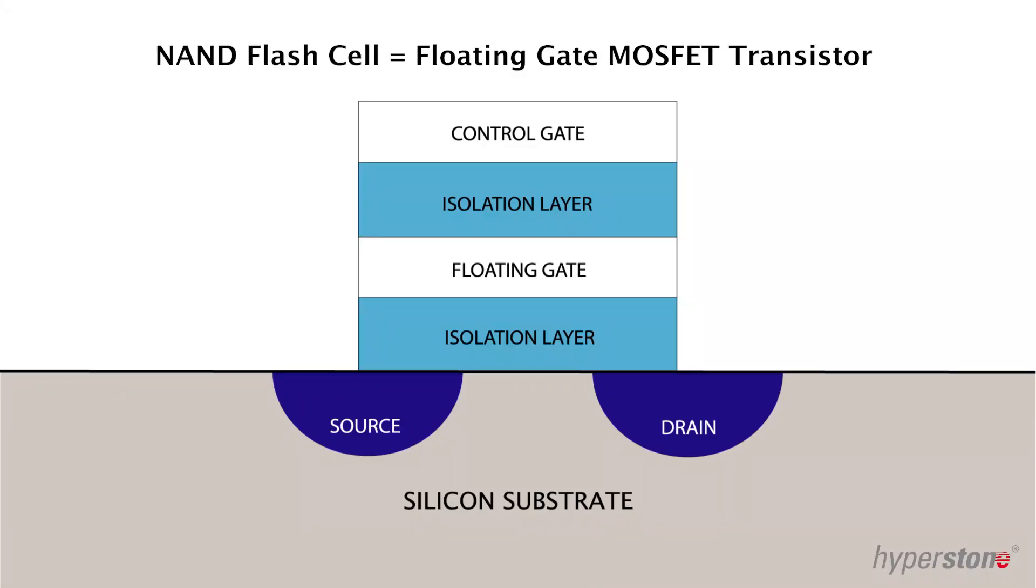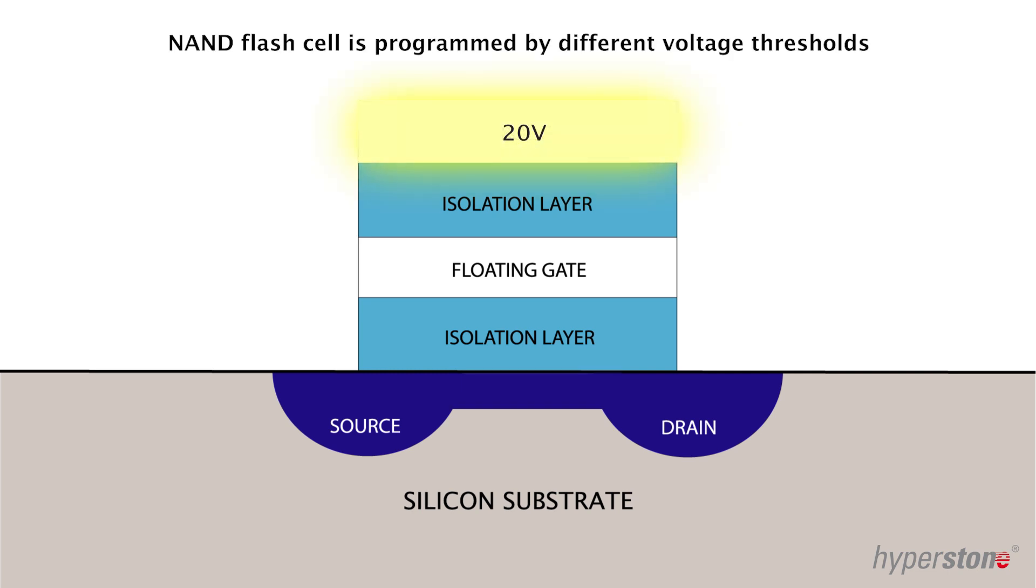Most NAND flash memories are based on this floating gate MOSFET transistor. Also known as a NAND flash cell, it can be programmed by different voltage thresholds.